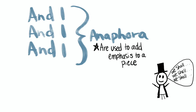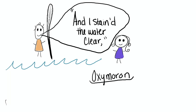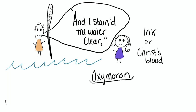The sentence 'and I stained the water clear' is an oxymoron — where words that are contradictory to one another are placed together. Staining the water clear has been said to refer to the water being stained to make an ink. But it could also be looked at from a Christian point of view, where the water represents Christ's blood and it being stained represents the sins of the people — Christ taking on himself the sins of the world, with the water being stained clear.